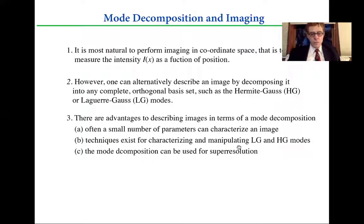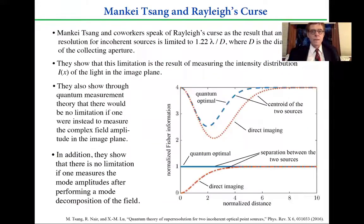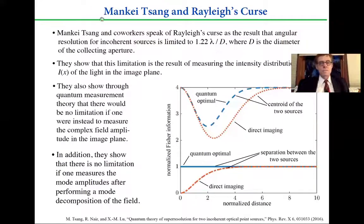How do we achieve super resolution in this manner? Mankei Tsang, a few years ago, came up with a proposal for how to do this. In fact, they talk about this as Rayleigh's curse. Rayleigh's curse is that you cannot achieve a resolution better than 1.22 lambda over D, where D is the diameter of the collecting aperture. But they go on to show in this paper of theirs that this limitation is not fundamental.